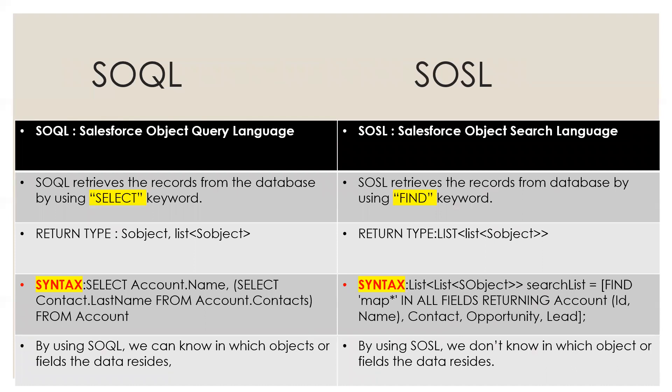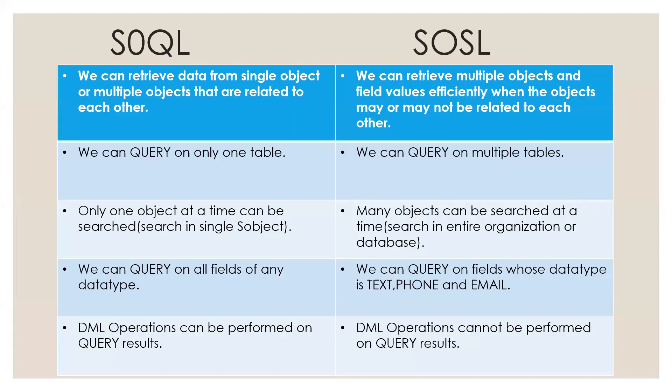This is the syntax. By using Sokol, we can know in which object or field the data resides. By using Soso, we don't know in which object or field the data resides. We can retrieve data from a single object or multiple objects that are related to each other using Sokol. We can retrieve multiple objects and fields efficiently when the objects may or may not be related to each other using Soso. By using Sokol, we can query on only one table, but by Soso, we can query on multiple tables.